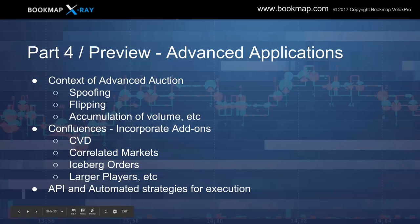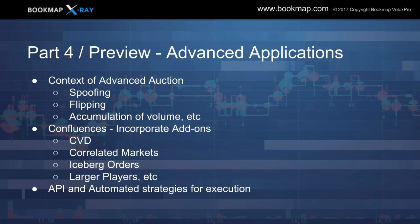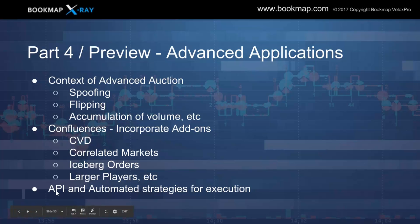Part four — we're going to go over the advanced applications. Let's preview it a little bit: context of the advanced auction, we're going to start to look at some spoofing, flipping, accumulation of volume, and other things, with confluences at these areas. The same strategies, the same basic market mechanics, and the same analysis of higher timeframes — but now we're going to add in these confluences. We'll look at the cumulative volume delta, correlated markets, the iceberg indicator or hidden orders, larger players where they might be lining up. For execution, you can start to look into the API and automated strategies within Bookmap.